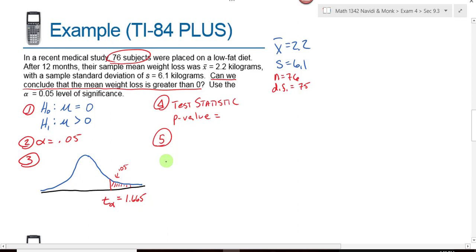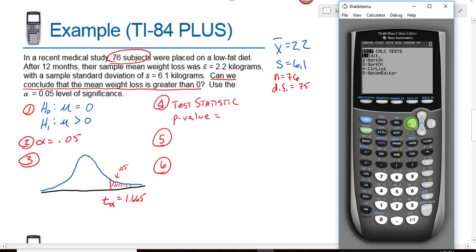Number 4 is finding your test statistic and your p-value. Before I can do anything on step 4, I need to go to stats, test. Which test do I pick? Why do I choose the t-test and not the z-test? My population standard deviation is unknown. I have summary statistics, so I highlight statistics. The value from the null happens to be 0. X bar is 2.2. The sample standard deviation is 6.1. My sample size is 76. And this will be a right-tailed test. So I highlight greater than. And then we calculate the results.